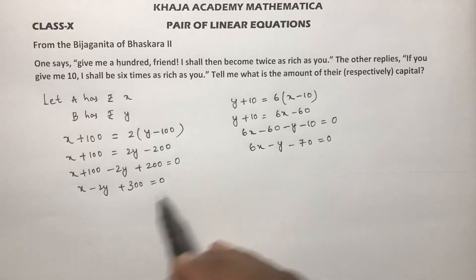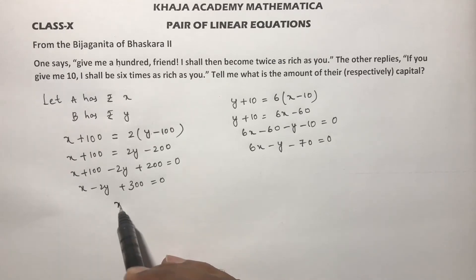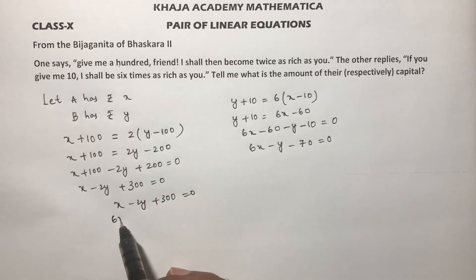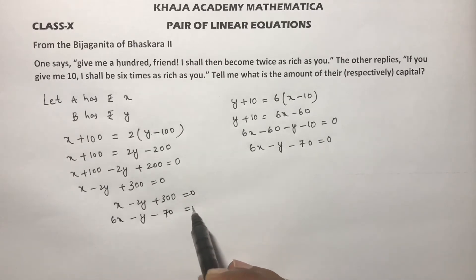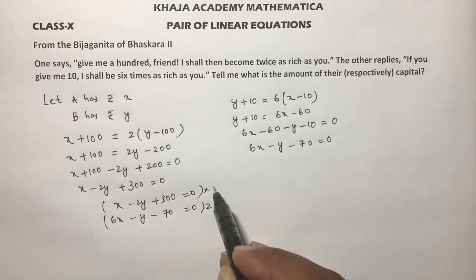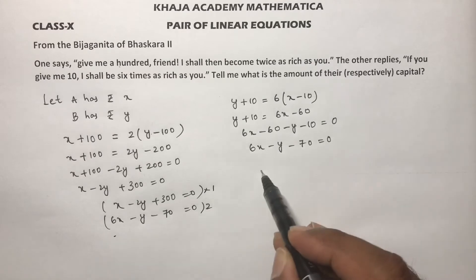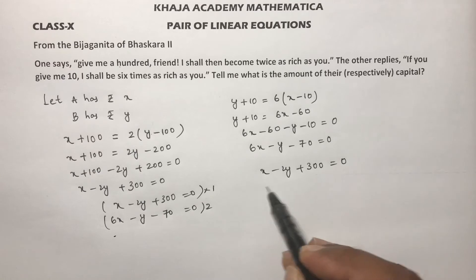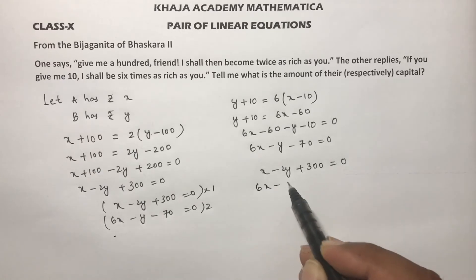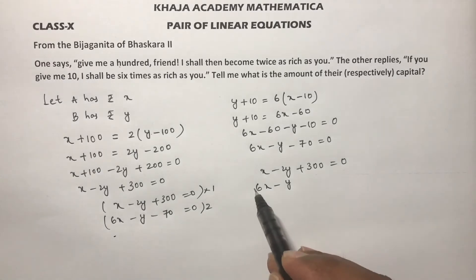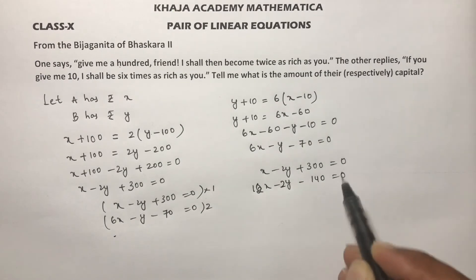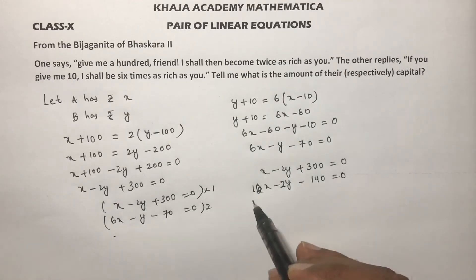Now if I'll solve these two equations, one is x minus 2y plus 300 equals 0. The second equation multiply with 2, first one with 1. So x minus 2y plus 300 equals 0, 6x minus y, if you multiply with 2 it will become 12x minus 2y minus 140 equals 0.